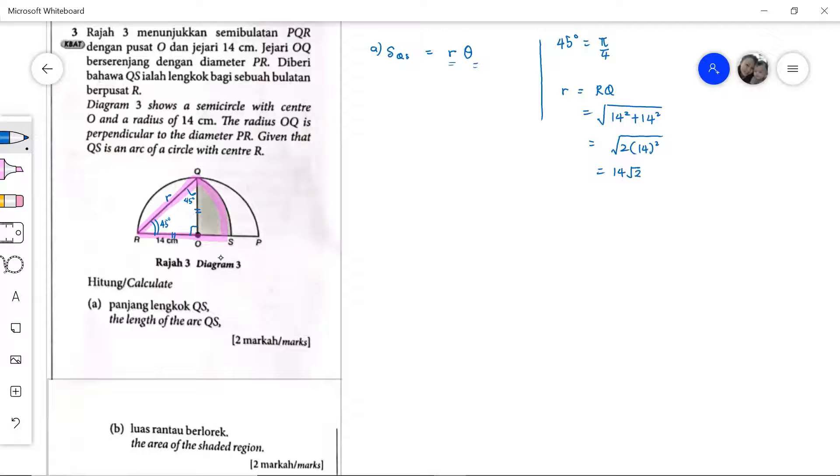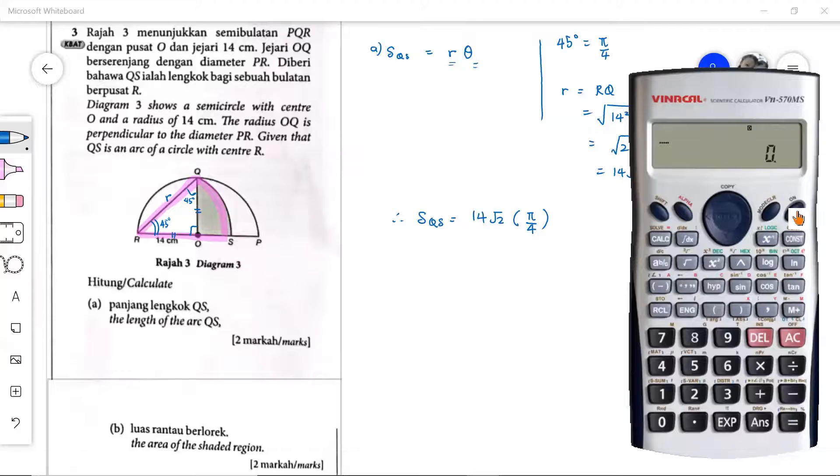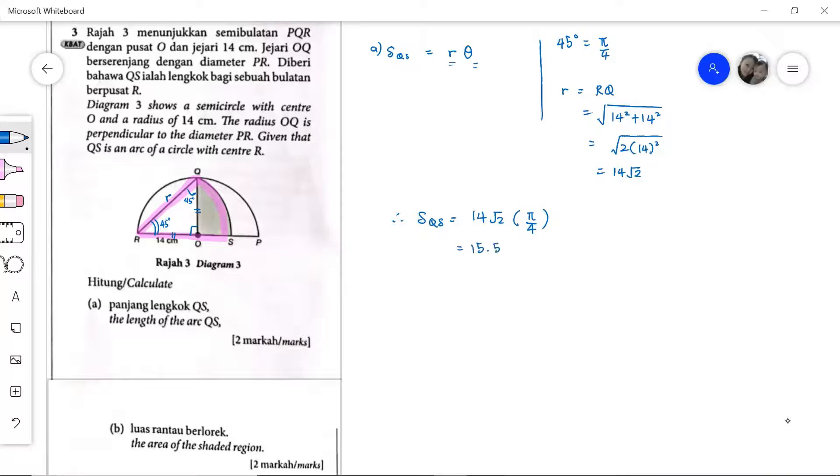So we have the angle, we have the R. Now we can find the arc QS, that will be R 14 root 2 times pi over 4. Since the pi value is not given, we shall use the pi value given in the calculator. So 14 root 2 times pi over 4. The answer that we got is 15.55 cm. That's part A.